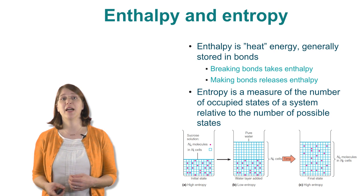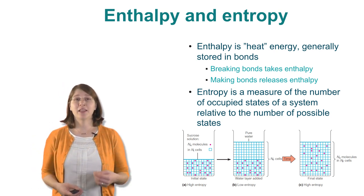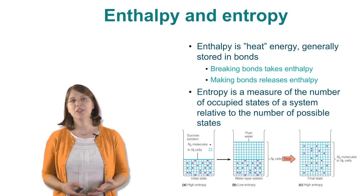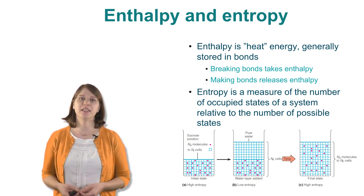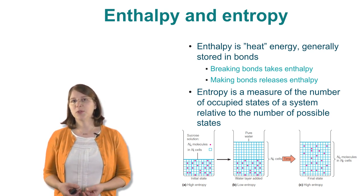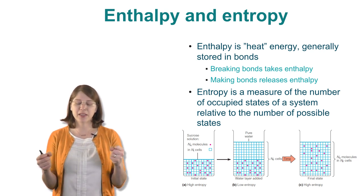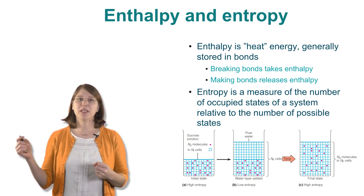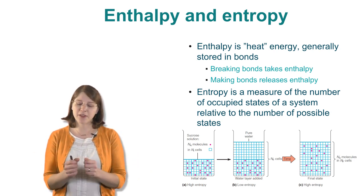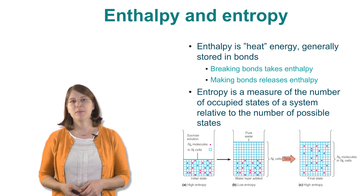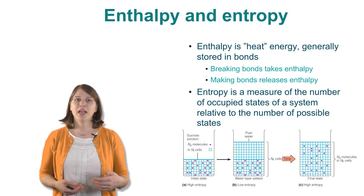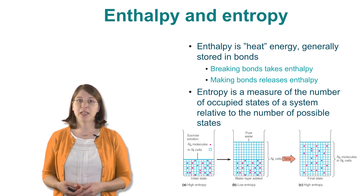Enthalpy is usually considered heat energy in chemistry, hence the value delta H, and is usually considered to be stored in bonds. If we're going to pull two things apart, that's going to take energy, meaning we'll have to put in enthalpy — a positive delta H. And if we're going to put two bonds together, that's going to release energy, giving us a negative or favorable enthalpy. So making bonds is favorable, and generally breaking bonds is unfavorable.